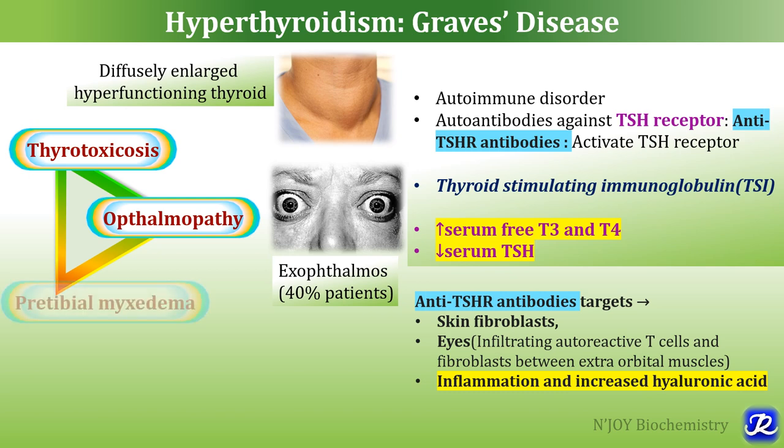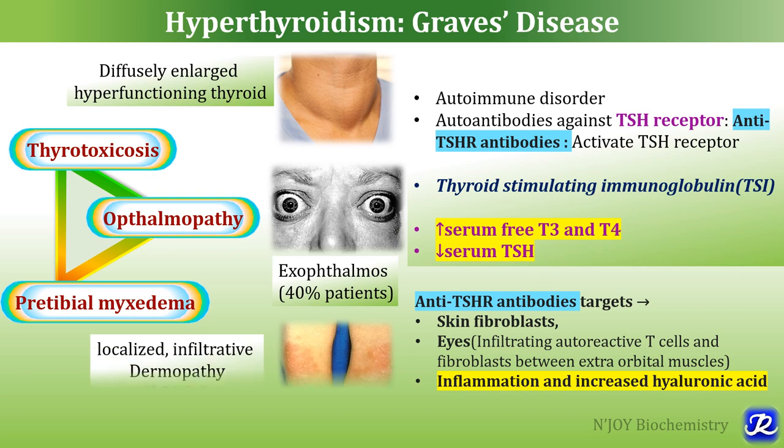The third important manifestation of Graves disease is pre-tibial myxedema. There is localized infiltrative dermatopathy because the antibodies also target skin fibroblasts, leading to increased synthesis of mucin and various glycosaminoglycans. This results in localized dermatopathy, which is a specific feature of Graves disease. So the three important clinical manifestations of Graves disease are thyrotoxicosis, ophthalmopathy, and pre-tibial myxedema.